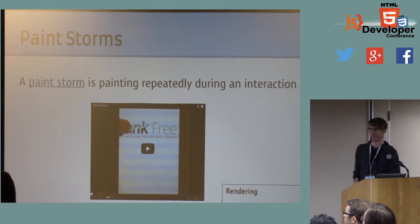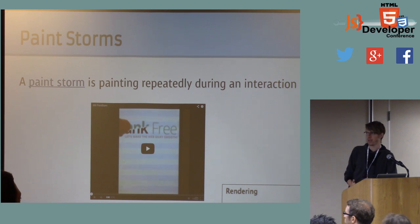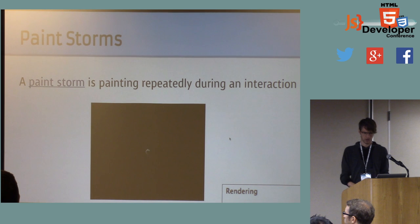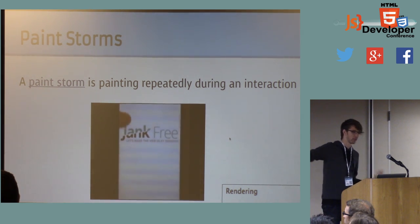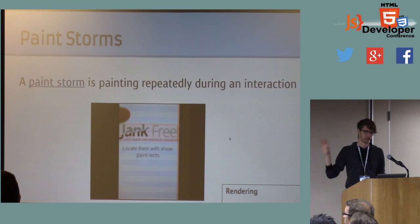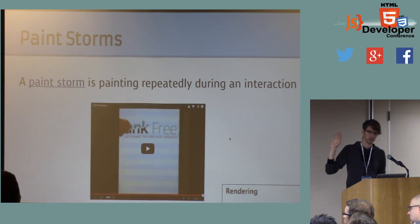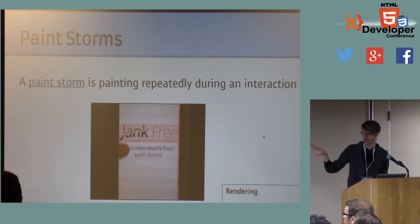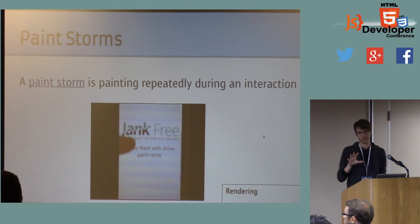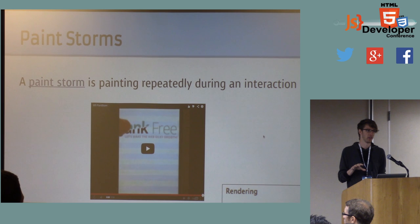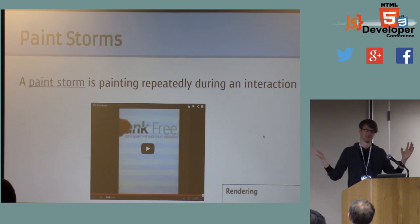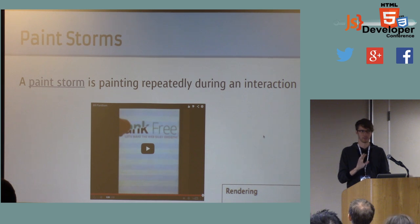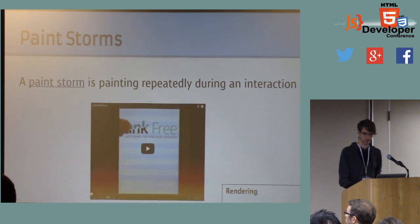The worst case scenario is what we affectionately refer to as a 'paint storm' — when you're painting repeatedly during some interaction. This is the same example I showed at the beginning, but with another DevTools feature turned on called 'Show Paint Rectangles,' which is also under the rendering menu. It's been there forever but a lot of people still don't know about it. You can see where it's flashing on the screen — those flashes show what part of the screen got repainted that frame. If you're only changing properties that require recomposite, you won't see any flashes at all. But if you're seeing flashes every single frame, you're probably in bad shape.